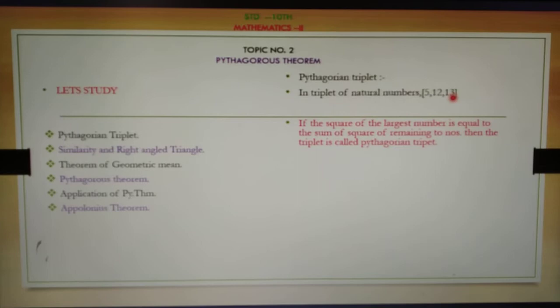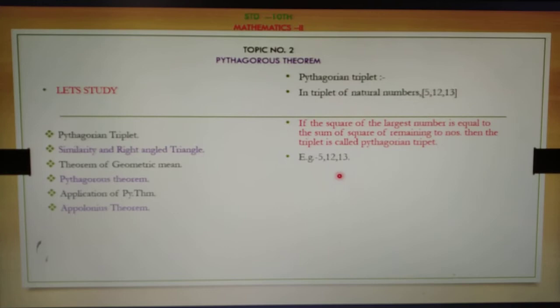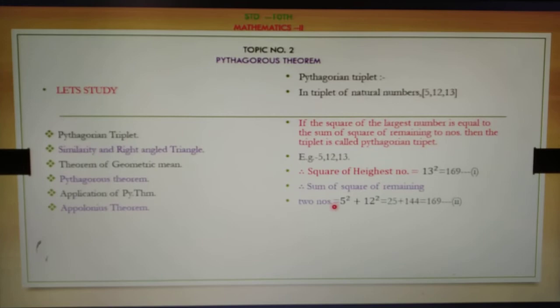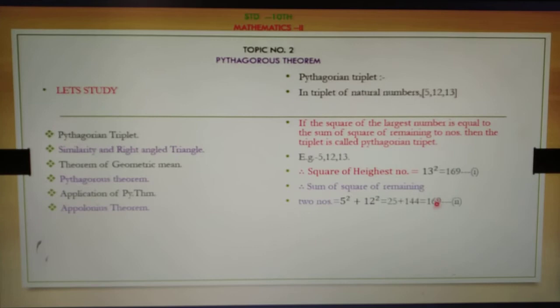For example, take the numbers 5, 12, 13. The largest number is 13. Square of 13 equals 169 — this is equation one. Sum of squares of the remaining two numbers: 5 squared plus 12 squared equals 25 plus 144 equals 169 — this is equation two. Since the RHS is the same in both, we get 13² = 5² + 12², so 5, 12, 13 is a Pythagorean triplet.